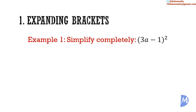Example 1. Simplify completely: 3a minus 1, squared. 3a minus 1 squared is equal to 3a minus 1 multiplied by 3a minus 1.